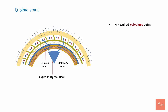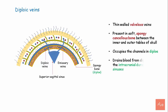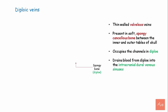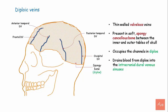Diploic veins are thin-walled, valveless veins present in the soft spongy cancellous bone between the inner and outer tables of the skull, occupying channels in the diploe. They drain blood from the diploe into the intracranial dural venous sinuses. There are four diploic veins: the frontal, anterior temporal, posterior temporal, and occipital diploic veins.